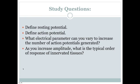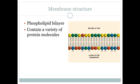A few things for you to look at for study questions: be able to define the resting potential, be able to define action potential, be able to define what electrical parameters you're able to vary to increase the number of action potentials that are generated, and what happens as you do things like increase the amplitude. What's the typical order of response in innervated tissues?